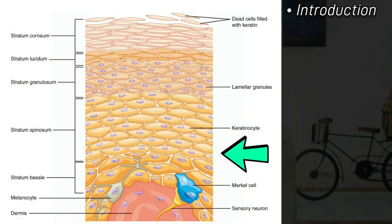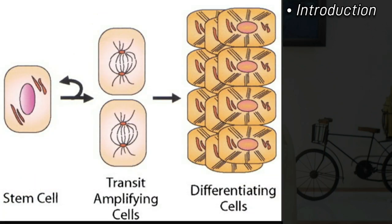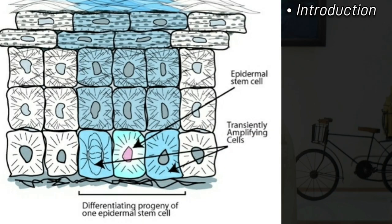In keratinization, the cells from stratum basale have to go to stratum spinosum, stratum granulosum, and stratum corneum. There are three types of cells in stratum basale. Stem cells have extensive proliferative potential, because of which throughout our life the epidermis is being replaced by newer epidermis. The second set of cells are known as transient amplifying cells — they form the bulk of the cells of the stratum basale, and because of them stable self-renewal of the epidermis is possible.